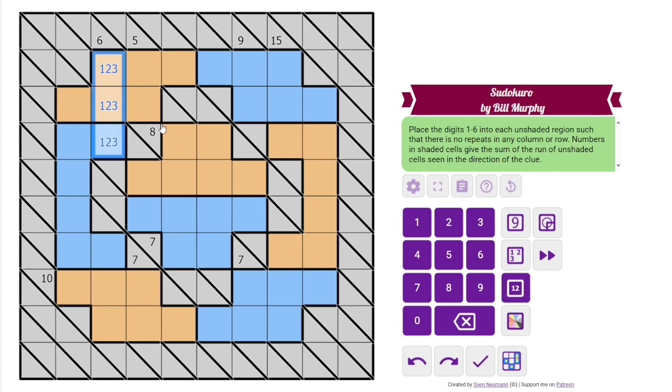6 in 3 cells must be 1, 2, 3. And because we can't have repeats in the column, if these are 1, 2, 3, these must be 4, 5, 6. 15 in 3 cells must be 4, 5, 6, since 6 is our highest digit. So these must be 1, 2, 3.